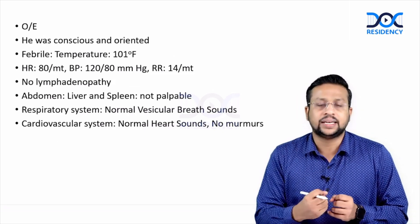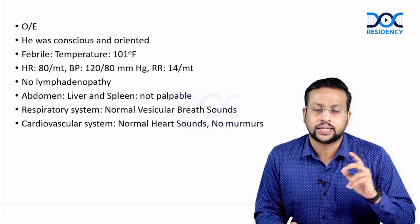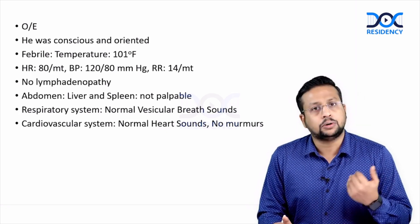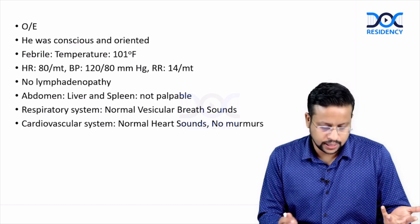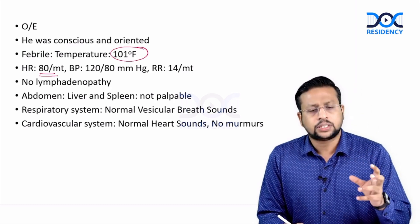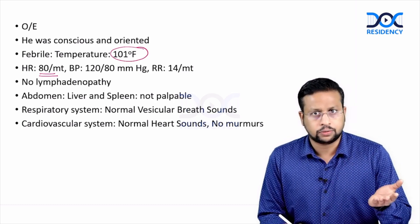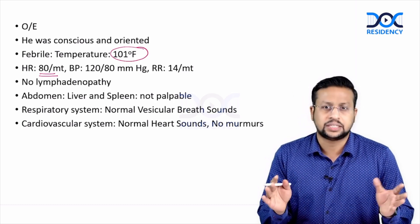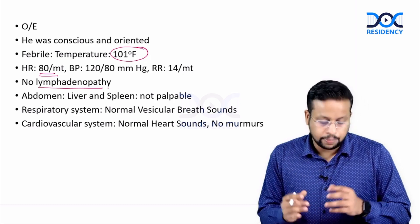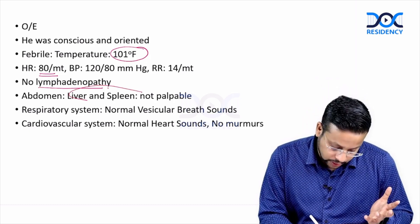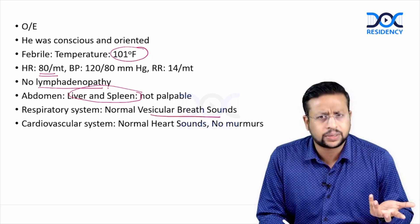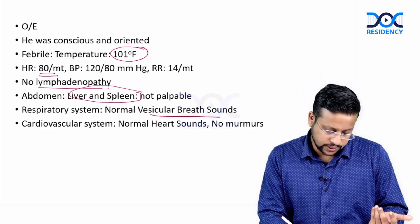So the presentation is fever of 12 days, with some loose stools initially, and no other localizing features. On examination, he was conscious and oriented. His temperature was 101°F, heart rate was 80, BP was 120/80, and respiratory rate was 14 per minute — the patient is stable. There was no lymphadenopathy. The abdomen showed no palpable liver or spleen. Respiratory system showed normal vesicular breath sounds with no added sounds, no crepitations, no wheeze.